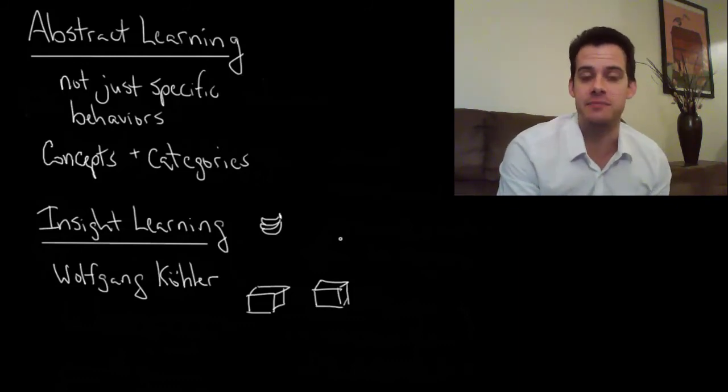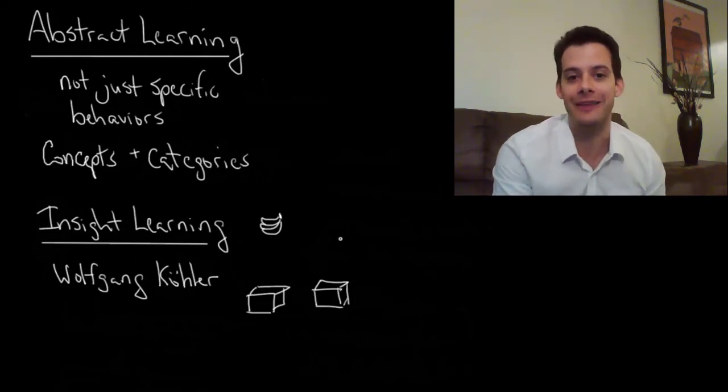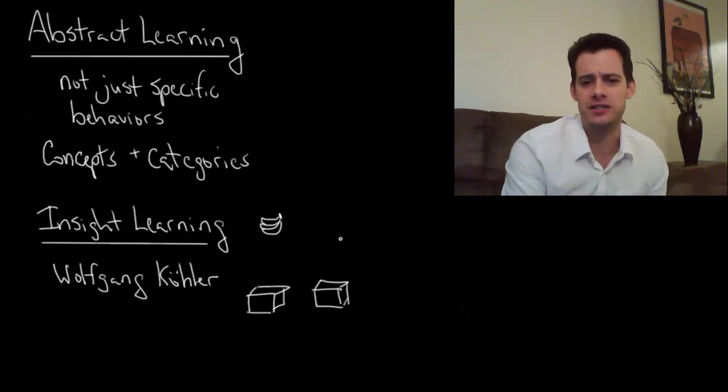You're not going to randomly stack these boxes on top of each other, climb on top of them and then reach the bananas. So how are the chimps going to solve the problem?